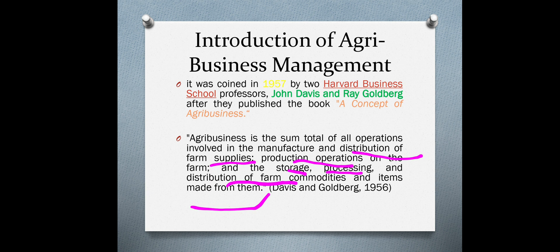Davis and Goldberg said agribusiness is the sum total of all activities — all activities of supplying inputs such as seeds, fertilizers, credit, and every other input — then operations or processing of the product on the farm, and after production there may be processing, storage, and distribution of farm commodities to the ultimate consumer. It is a combination of all activities directly and indirectly related to agricultural production.